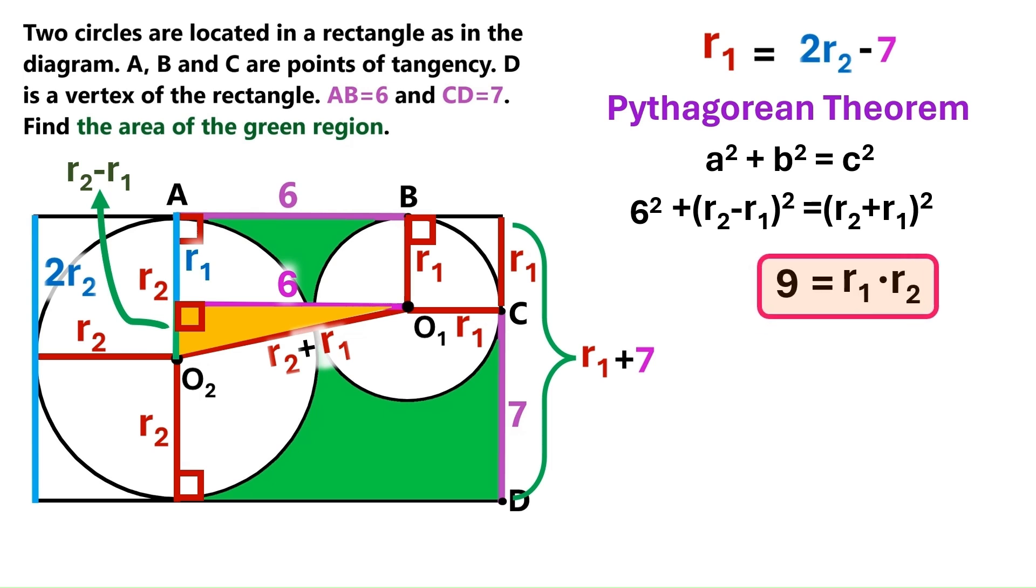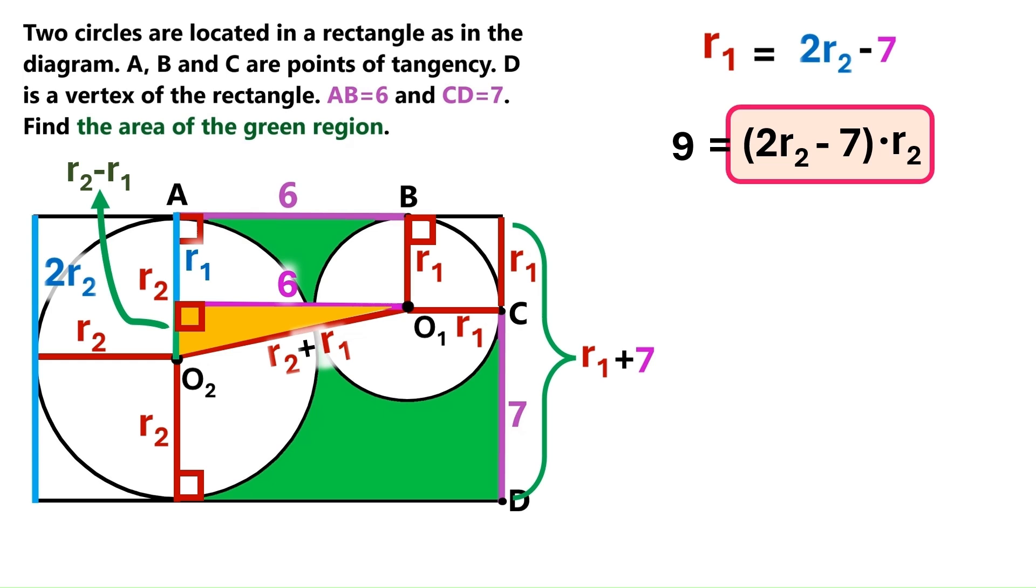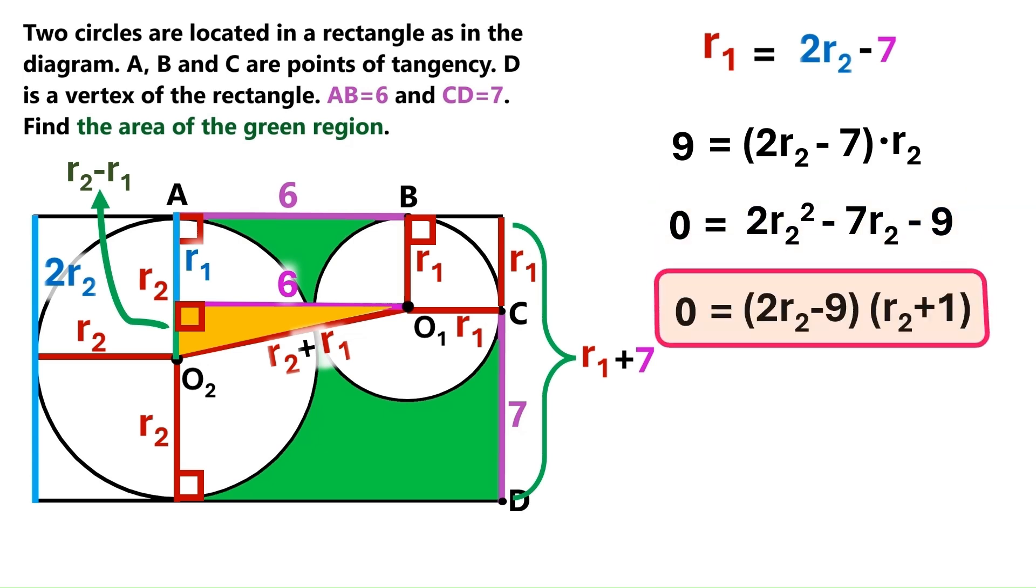And it turns out that R1 times R2 is 9. We already know that R1 equals 2R2 minus 7, so we can replace this R1 with that. Let's move this up a little bit because we need some space to work. We open up the bracket like this, and we move this 9 to the other side and it becomes minus 9. We've got this quadratic equation, and it can be factorized into this.